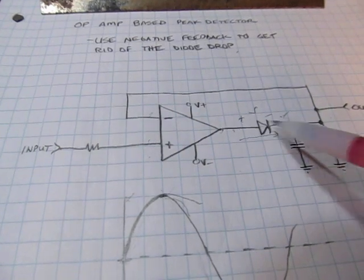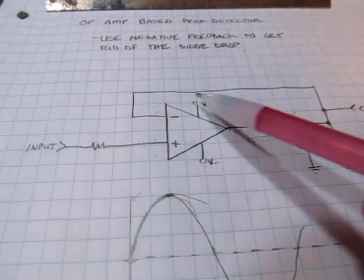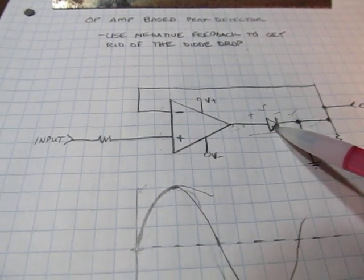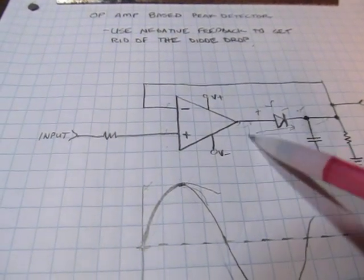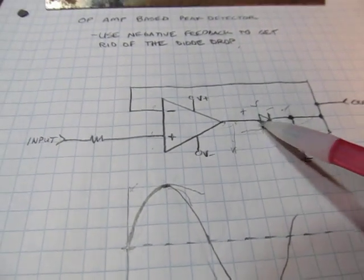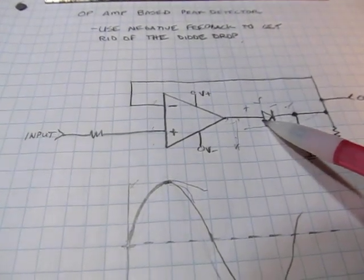This output is going to try to make this output come down so that it matches it. But what happens is that winds up turning this diode off. So this output will automatically just kind of go way down and usually ram down into the lowest voltage it can go to. The diode gets reversed biased, so it's off.